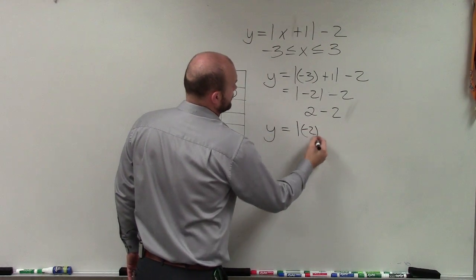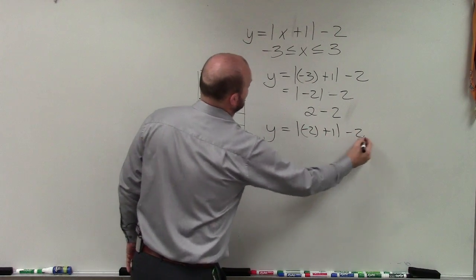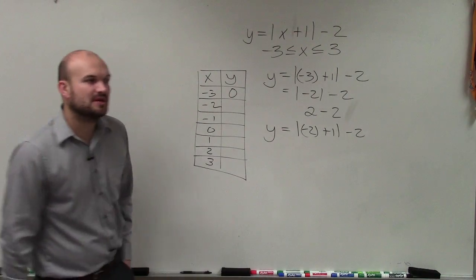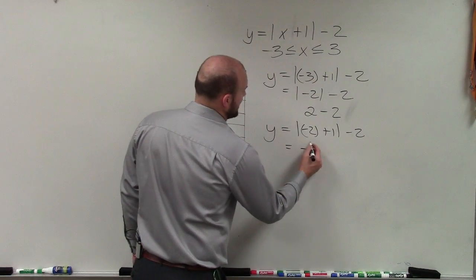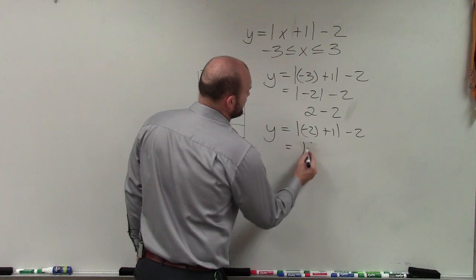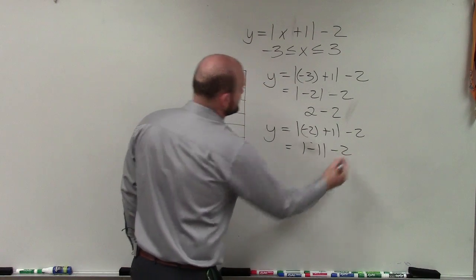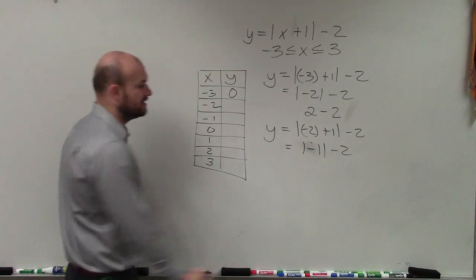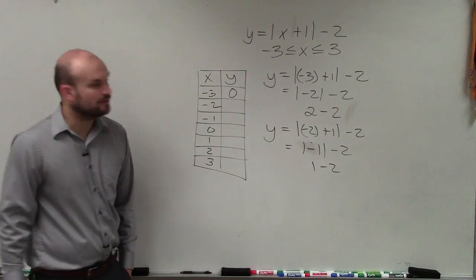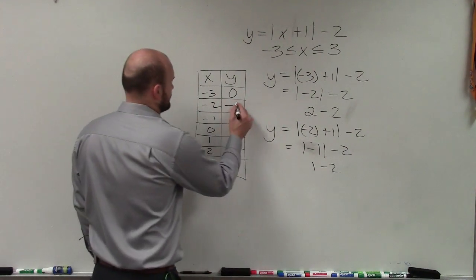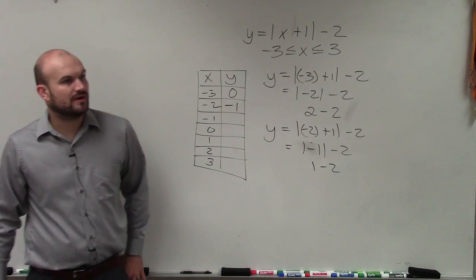Then I'll do the next one. Negative 2 plus 1, absolute value minus 2. Negative 2 plus 1 is going to equal the absolute value of negative 1, minus 2. Absolute value of negative 1 is 1, minus 2 is going to equal negative 1. Does everybody follow me so far?